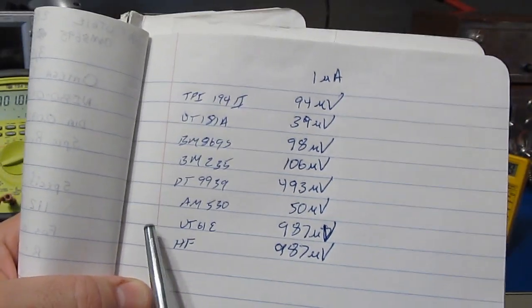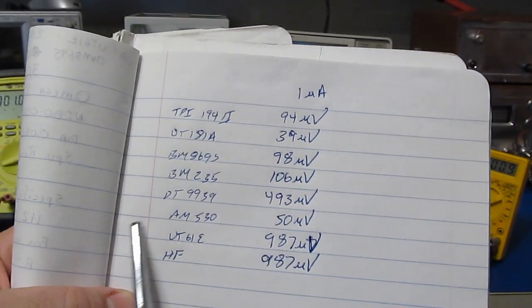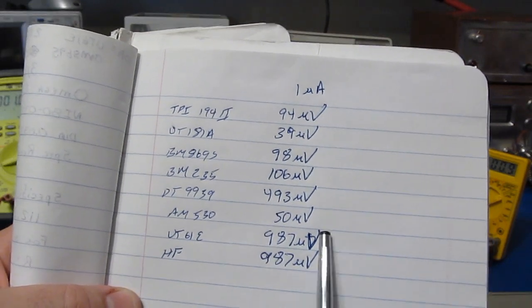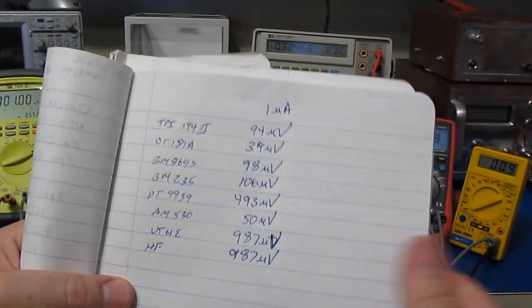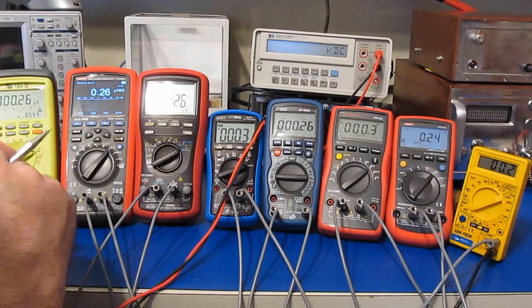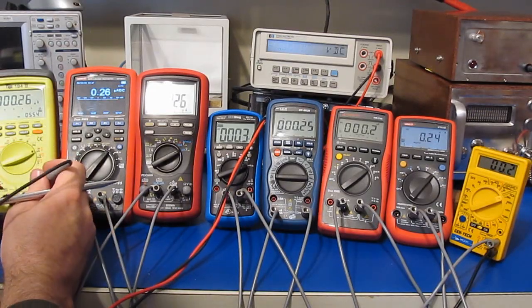Again, these are the least expensive meters of the whole group, so I kind of expect these would have the highest burden voltage. Let's just try taking it down a little bit further in current, so let's just see if this changes the drop.